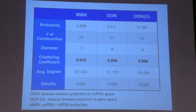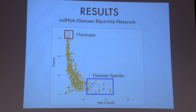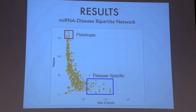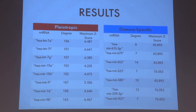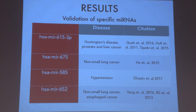Going along with this trend of specificity in the disease projection of micro-RNA space, plotted here is the correlation between micro-RNA disease strength versus degree. You can classify micro-RNAs into two groups: disease-specific, meaning they target a few diseases with high specificity, versus pleiotropic, targeting multiple different diseases weakly. Seen here are the top eight micro-RNAs identified by our model as being pleiotropic, and seven micro-RNAs identified as being disease-specific. Four of these disease-specific micro-RNAs have been validated in prior literature as potential biomarkers and therapeutics, experimentally confirmed to be linked to diseases like Huntington's, prostate and liver cancer, hypertension, and esophageal cancer.